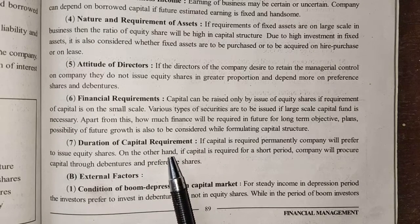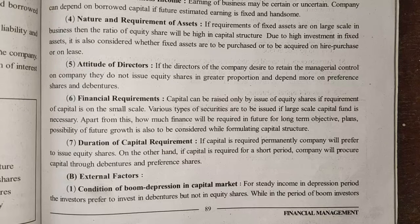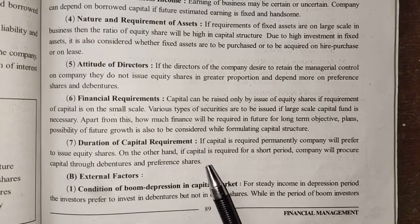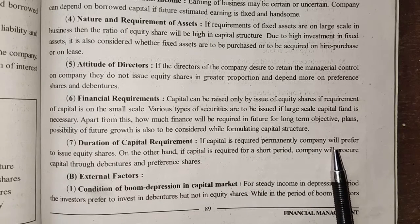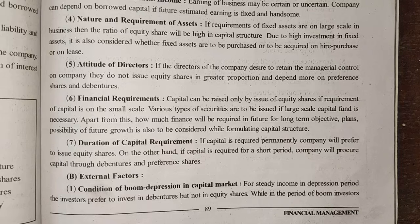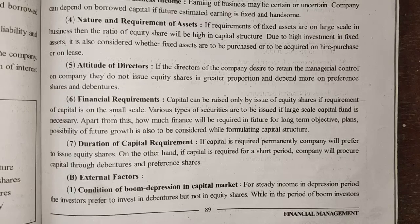Seventh internal factor: duration of capital requirements. If capital is required permanently, the company will prefer to issue equity shares. For a permanent business, equity is the best option because if profit is less, there is no extra burden on the company — dividends are paid to equity shareholders only from profit, with no fixed interest obligation.